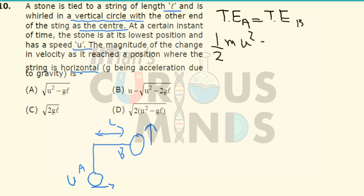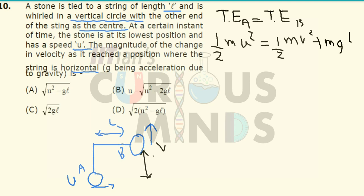The total energy at point B will be equal to half M V squared, where V is the velocity at point B, plus the potential energy. The potential energy will be equal to MGL, because the height from the base — considering the lowest point as the base — will be equal to L.